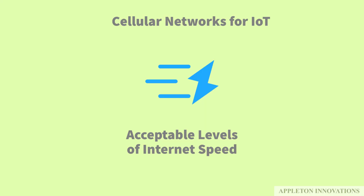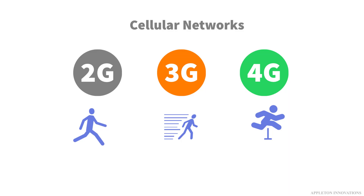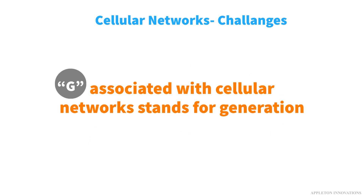When we talk about cellular networks in relation to the Internet of Things, we also have to talk about an acceptable level of speed that makes IoT device networking possible. Almost everyone knows about 2G, 3G, 4G, or LTE, but all we know is that 3G is better than 2G, LTE is the best, and 5G is being tested. But what's the actual difference, and what does IoT really need?